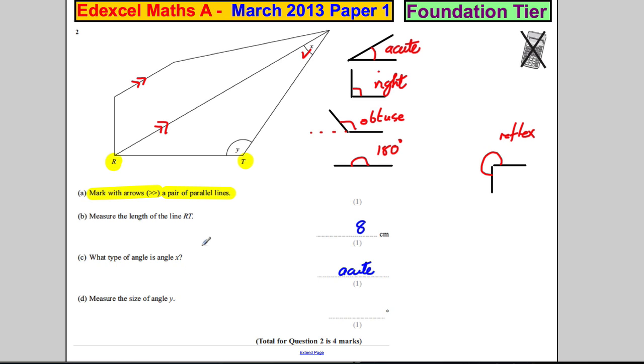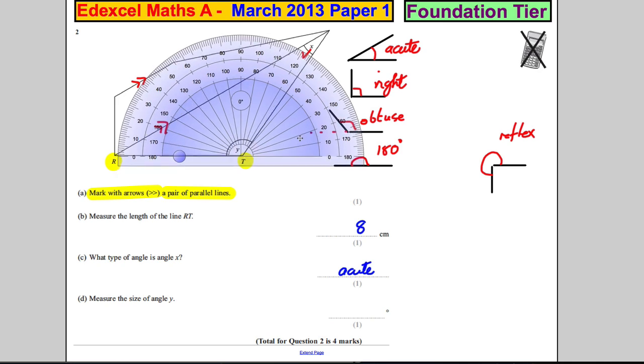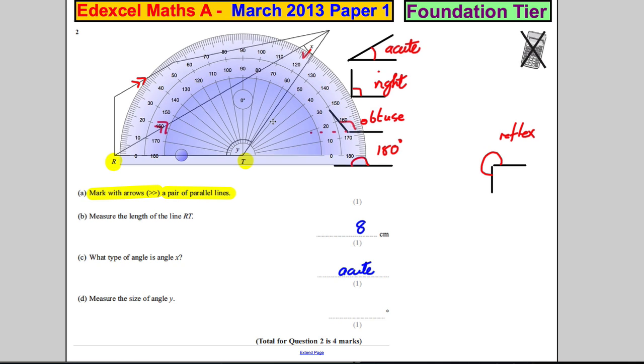And measure the size of angle Y. So let's get the protractor out. We're going to get our protractor and put, if we're measuring angle Y, make sure you put the center point of your protractor right on the corner there. Now we've got to be a little bit careful here. Some people make a mistake and they always measure from the inside and they'd say that angle is about 55. It's not true.